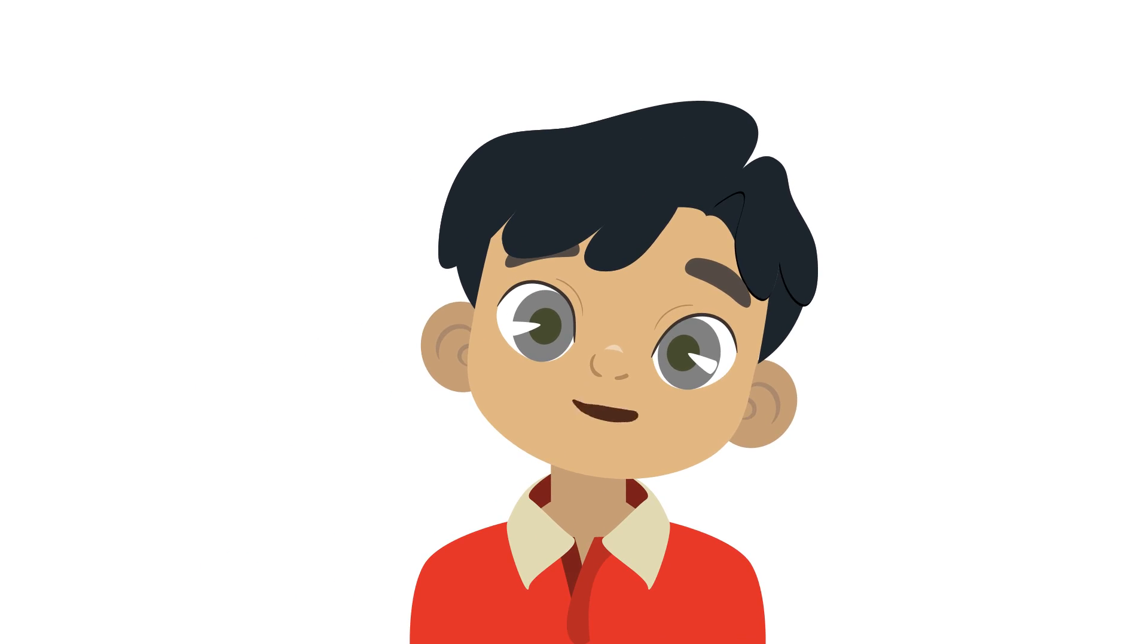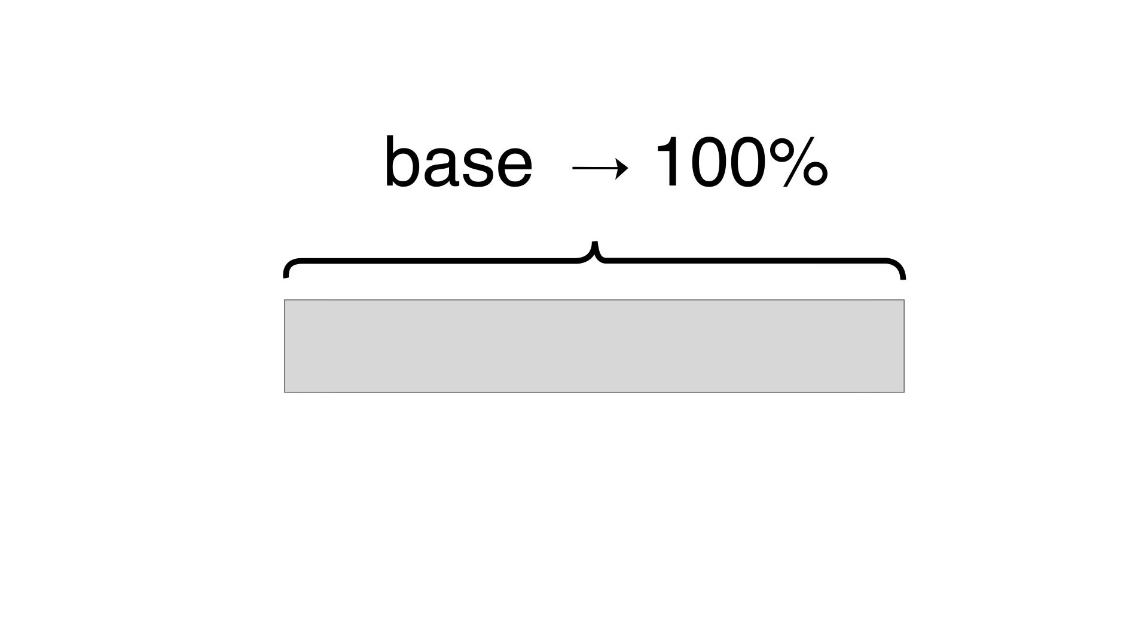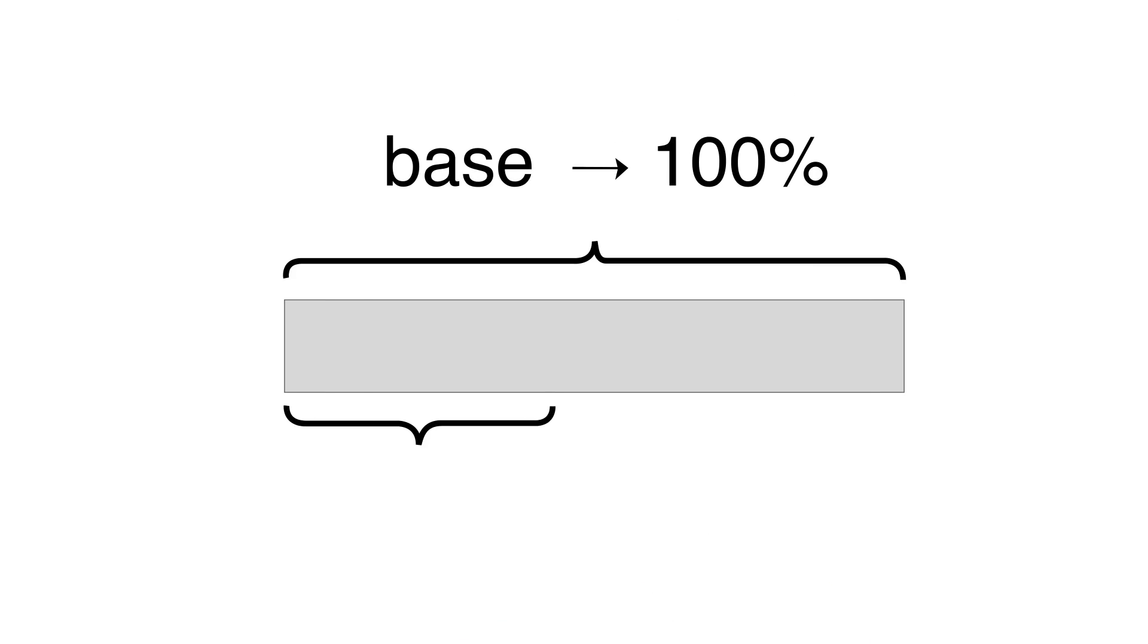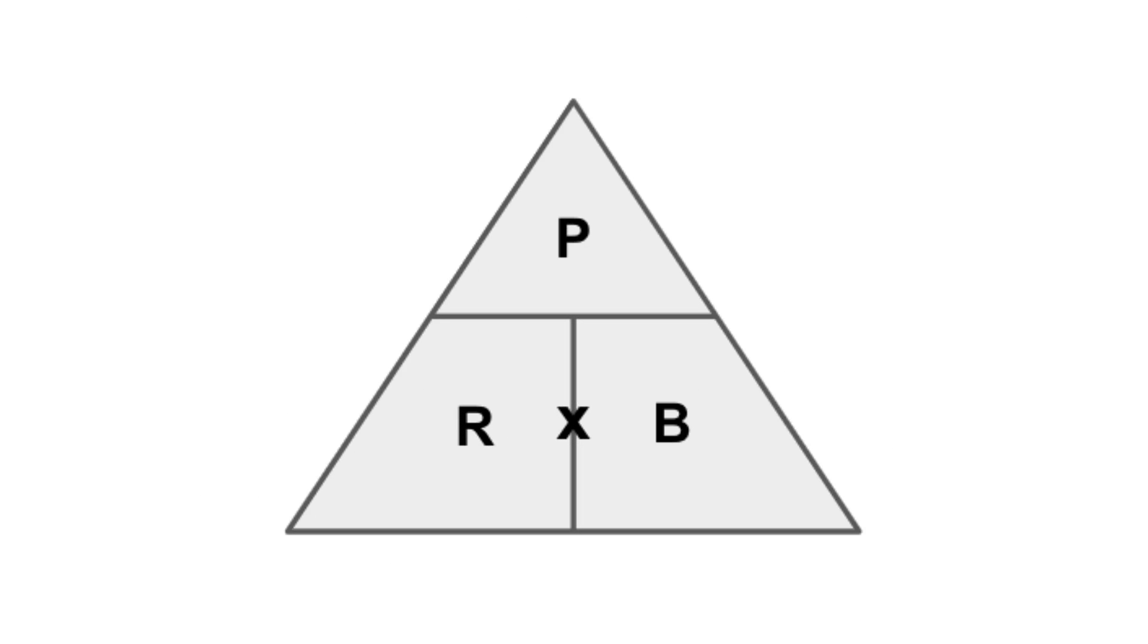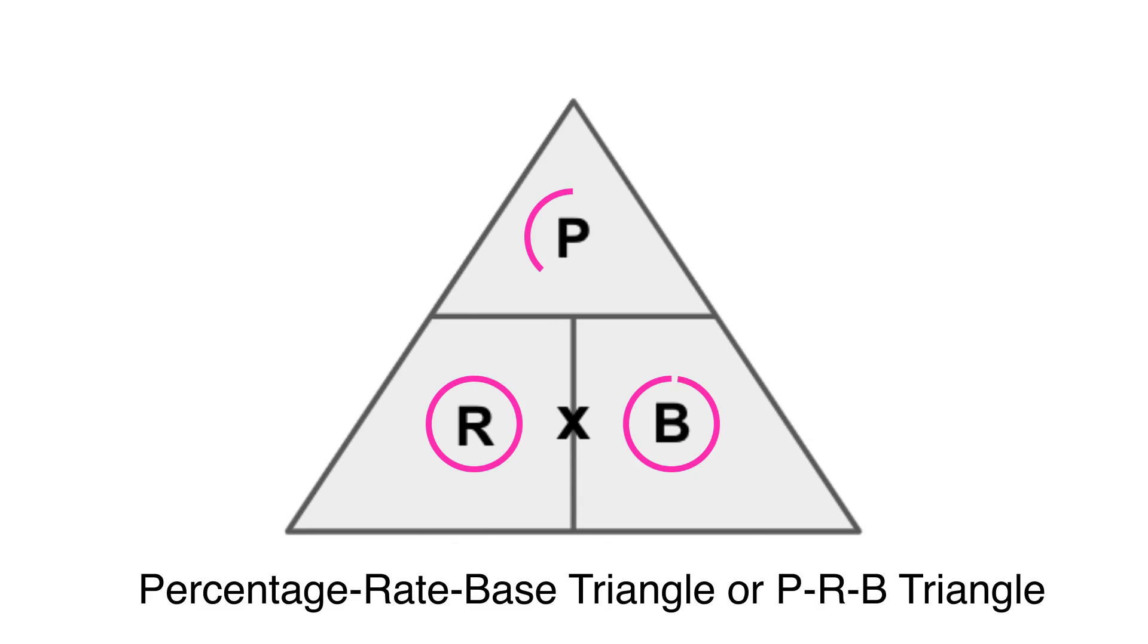So, how are these terms related? The base is equivalent to 100%, while the percentage is equivalent to the rate. In order to remember the operations related to each term, we make use of the percentage, rate, base triangle, or simply, PRB triangle.